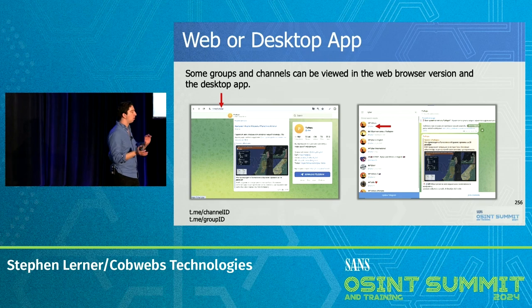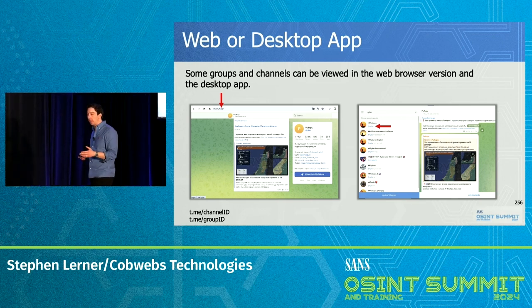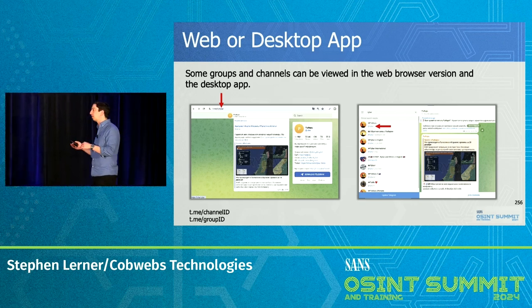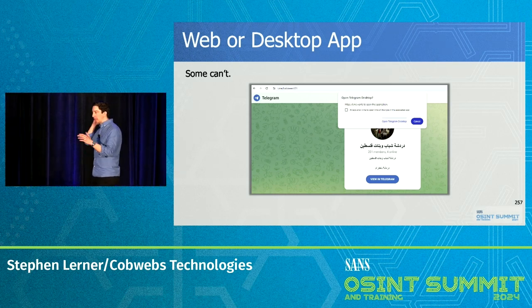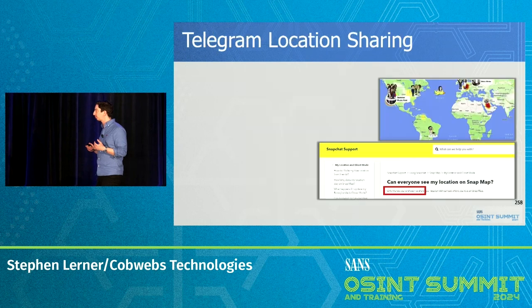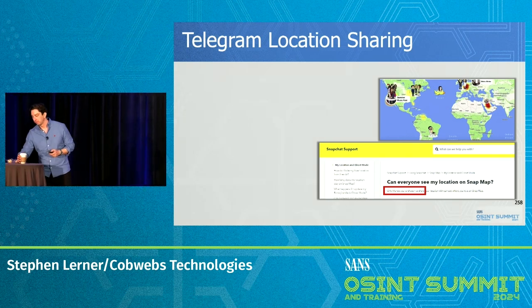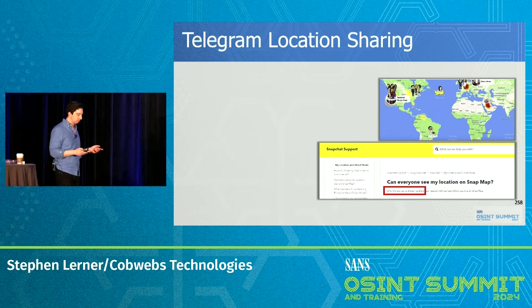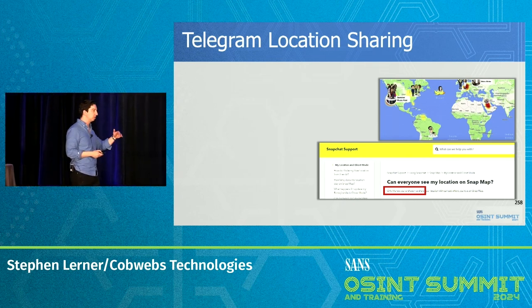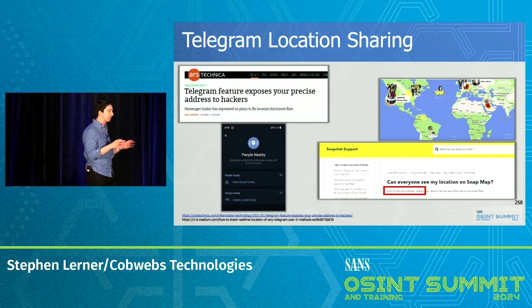You can use Telegram on your phone, on a web browser, or the desktop app. Here we have the same channel viewed both in Chrome and in the desktop app — they're quite similar. Some groups and channels you can view on either version, and some you can only view on the phone or desktop app, not the web version. In terms of location sharing, it is off by default; however if you turn it on, for Telegram — unlike some other platforms where only your friends can see your location — everybody within your vicinity can see it.